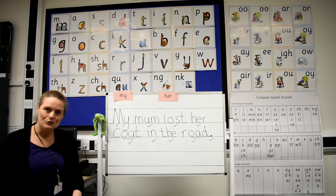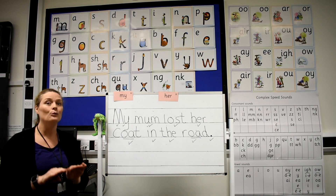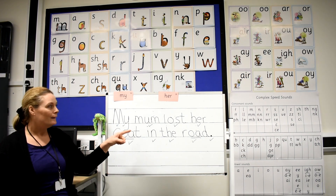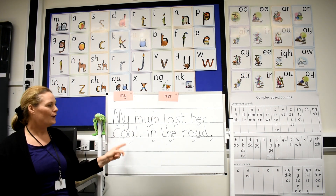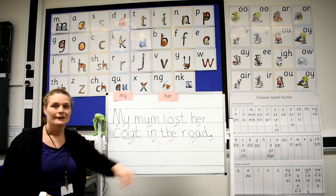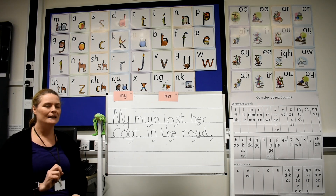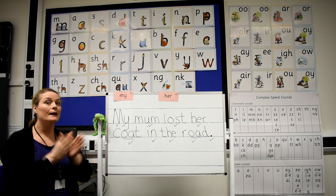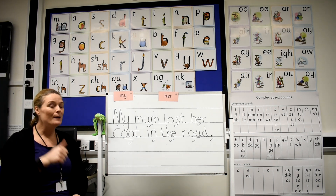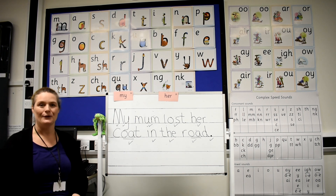Now, are you ready for your challenge? This is your challenge sentence to write all on your own: my mum lost her coat in the bedroom. Bedroom — it's got how many claps? Let's clap it: bed-room. It's got two claps. Remember that when you're writing the word bedroom. Off you go.